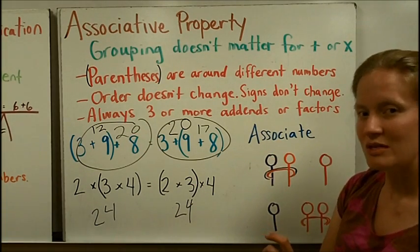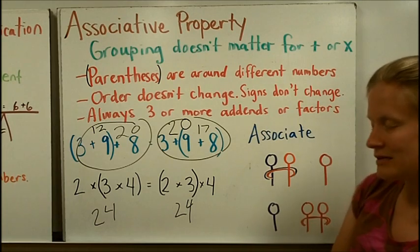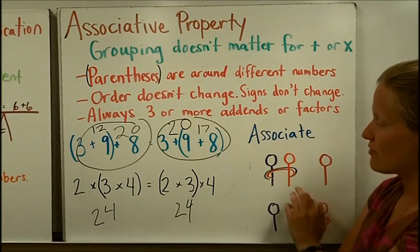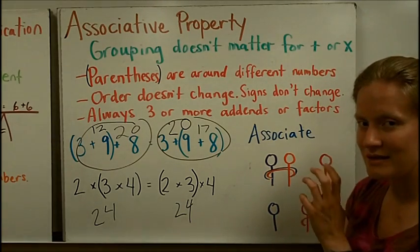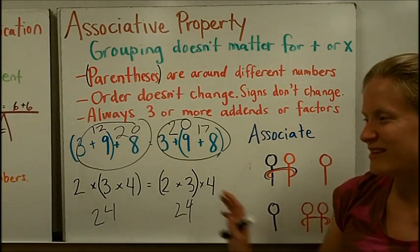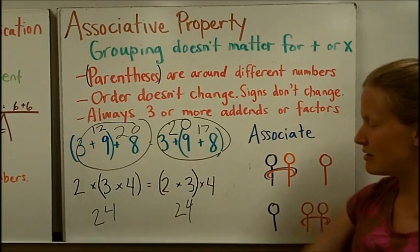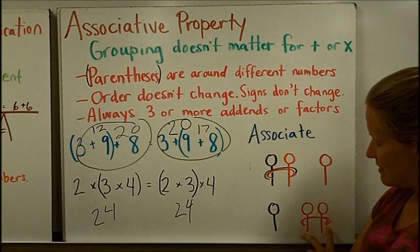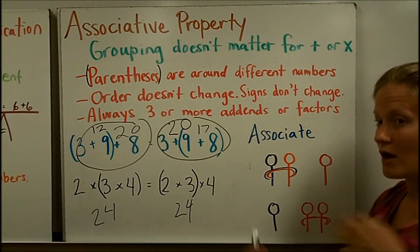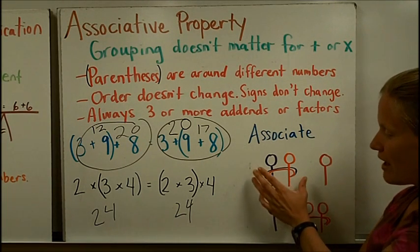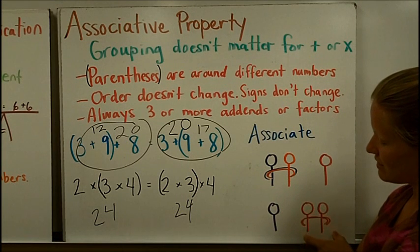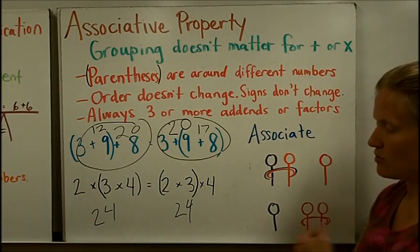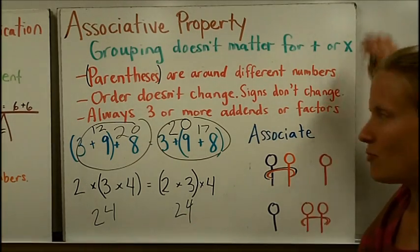I like to think about the word associate and friends. In the top picture, these are 3 friends, and 2 people are associating — grouping — together, like their arms are hugging around each other, which reminds me of the parentheses. The next day, a different 2 might hang out together. Either way, whether these are together or those are together, it's still the same group of 3 people. So the grouping doesn't matter in the associative property.